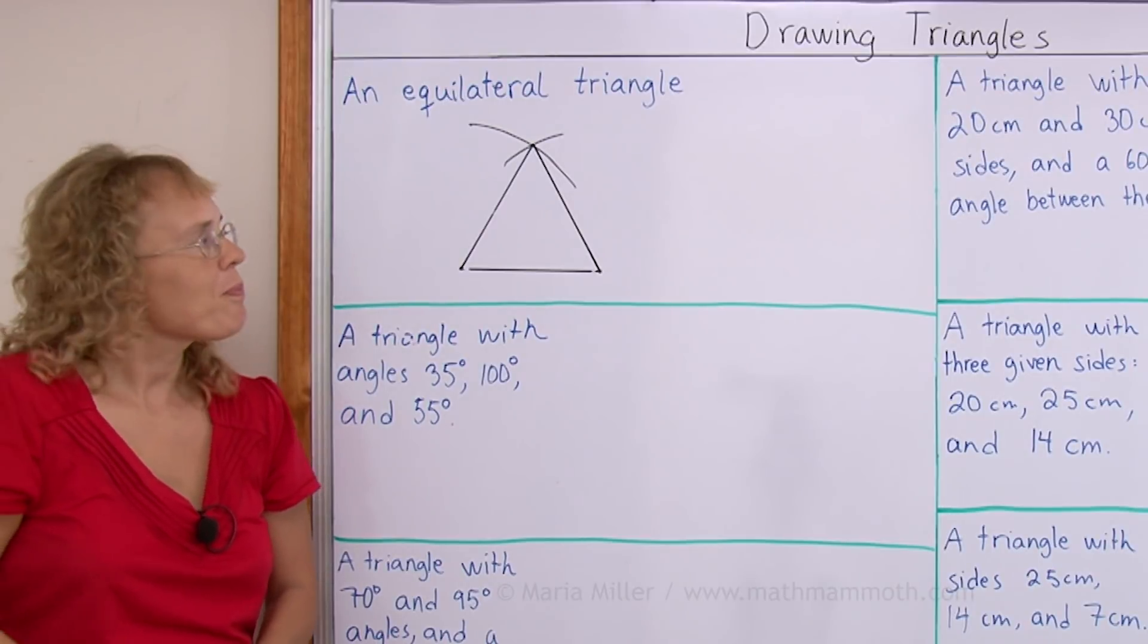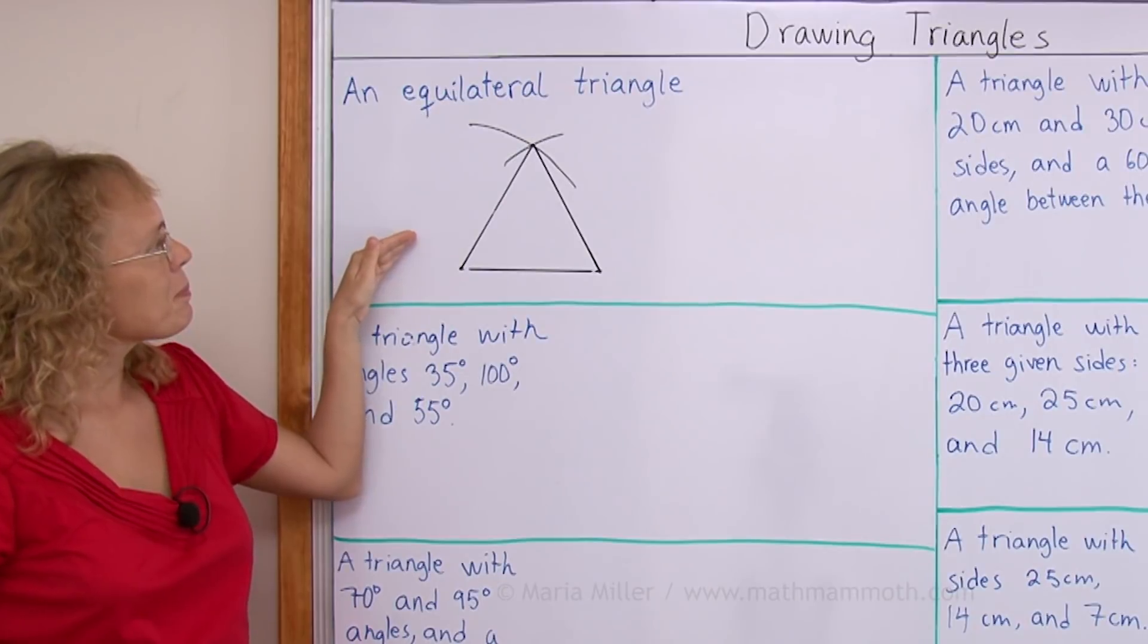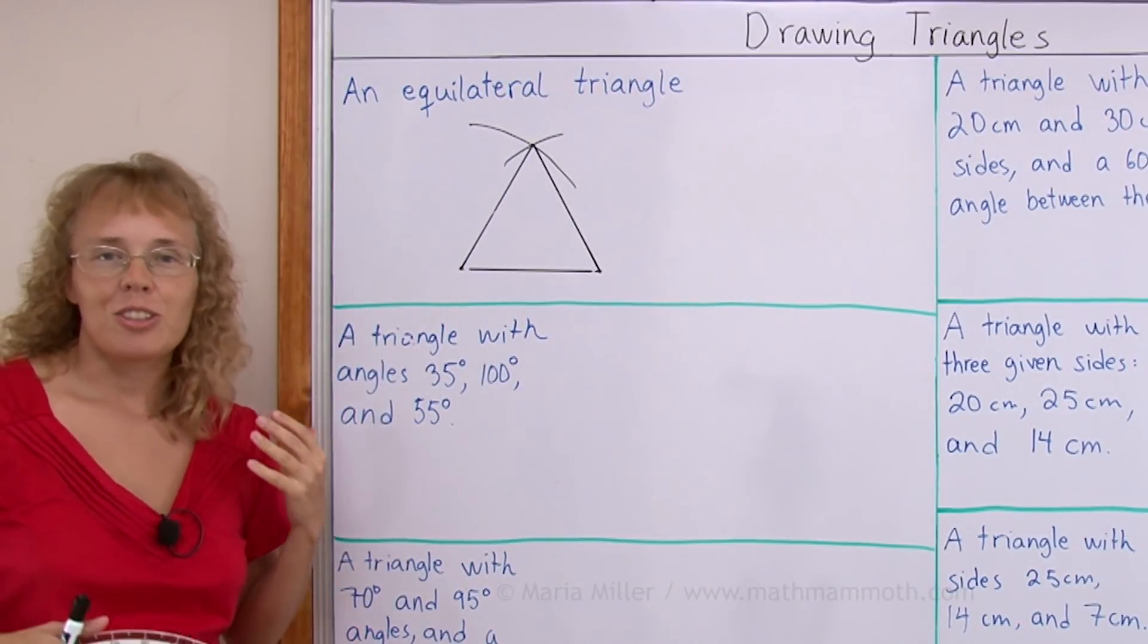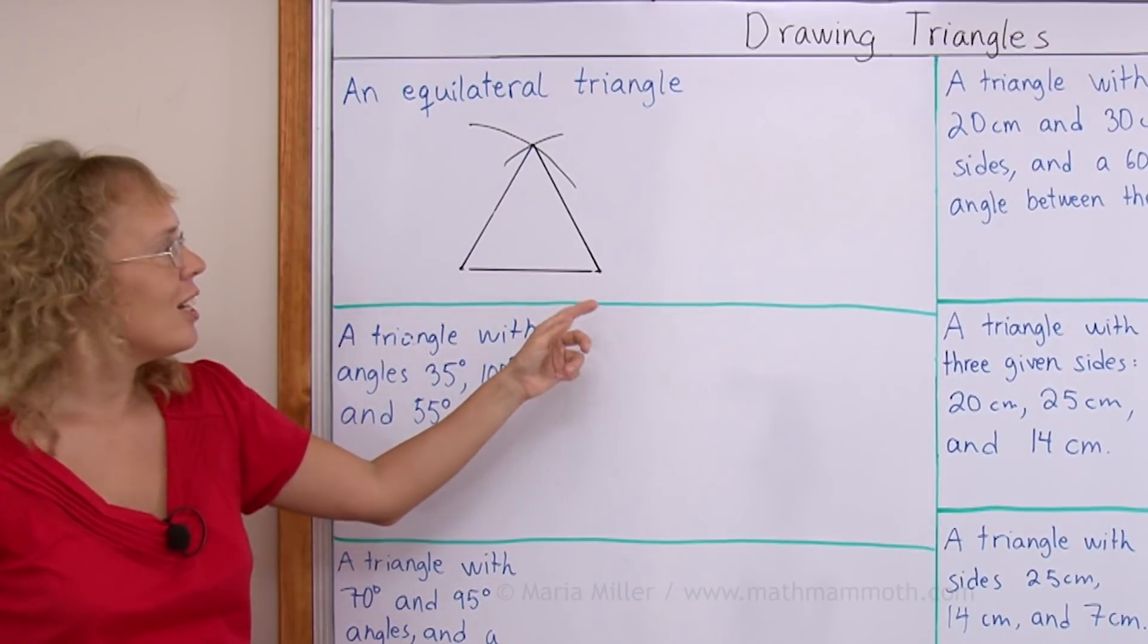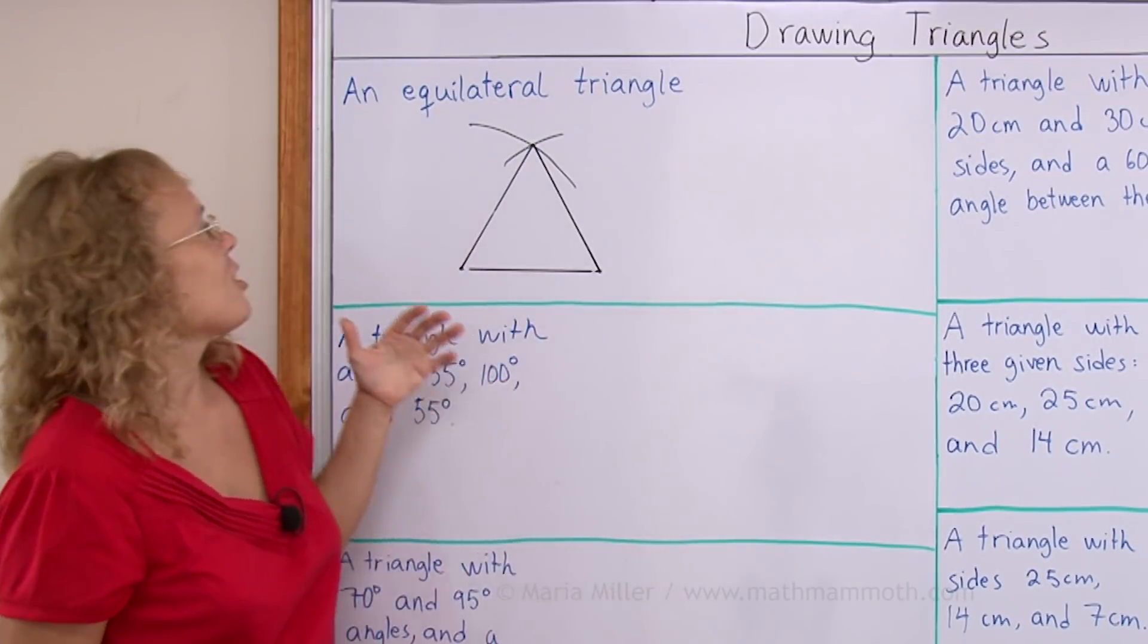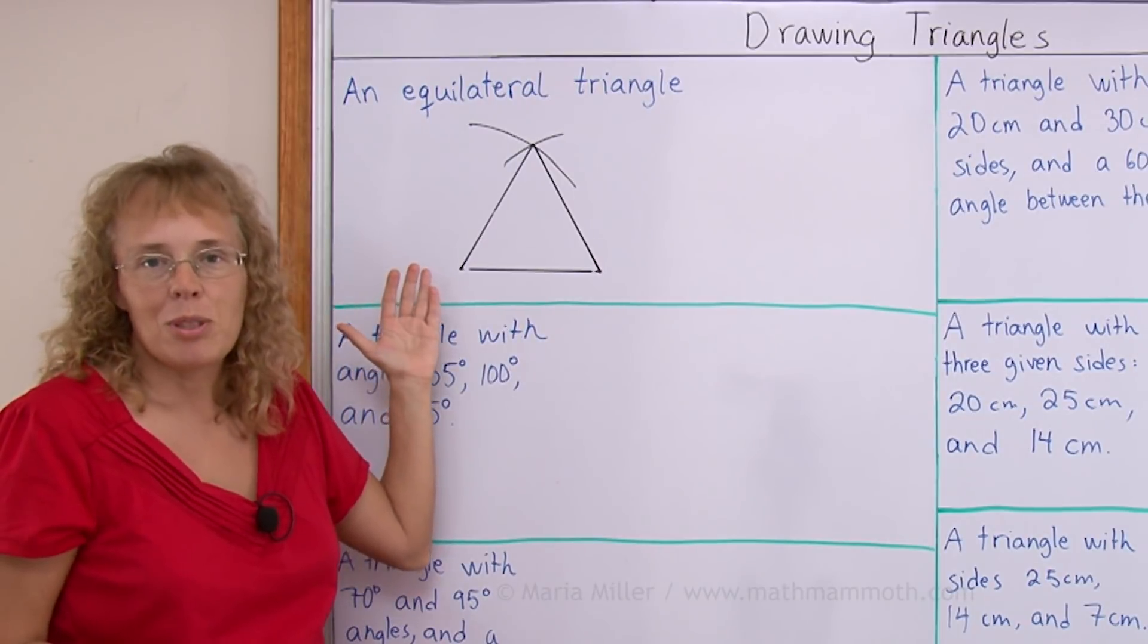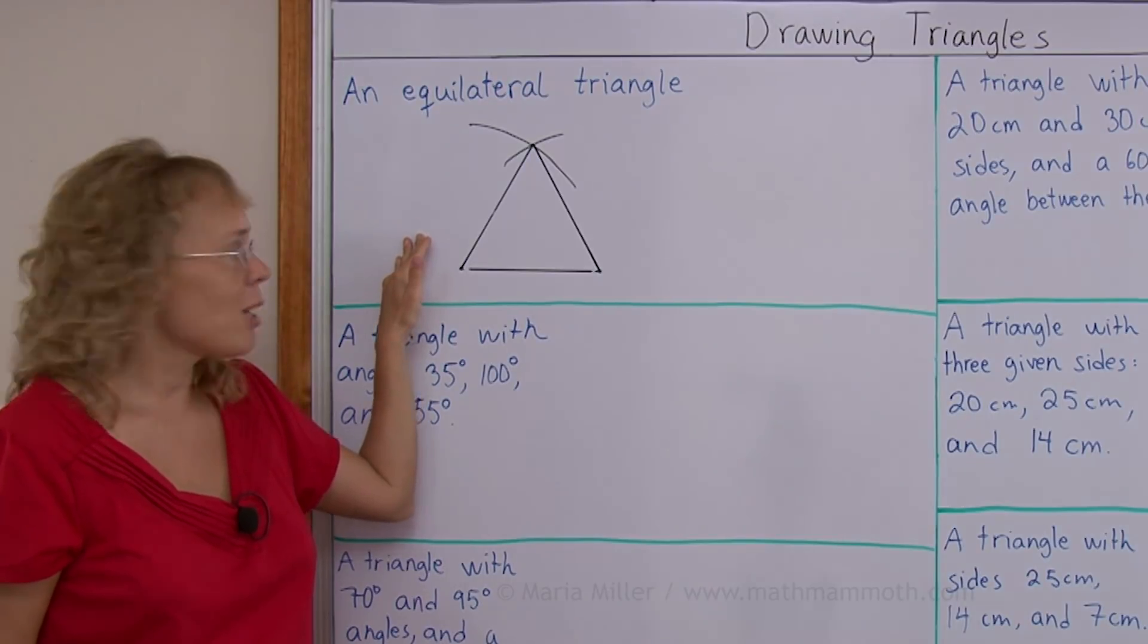A question though. Can I draw many different equilateral triangles? The answer is of course yes because in the beginning when I chose the length of this side I could have chosen it shorter or longer. So there's an infinite number of different equilateral triangles. They all are similar, they all have the same basic shape.